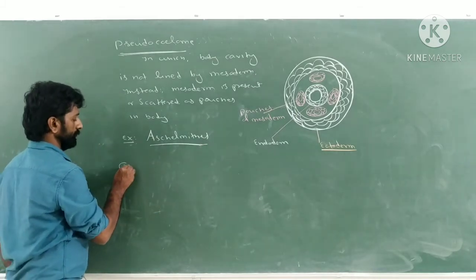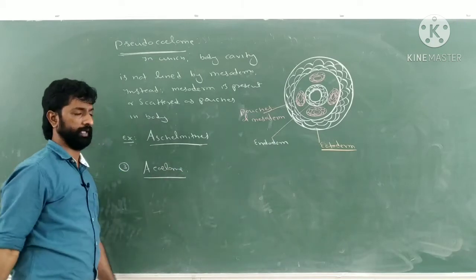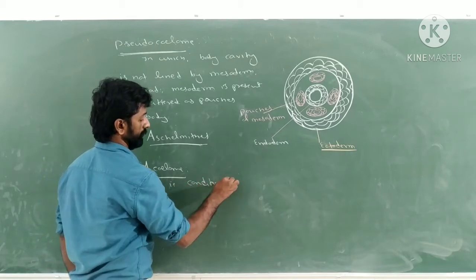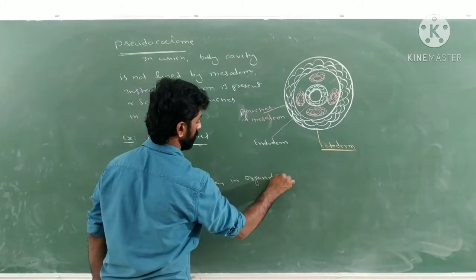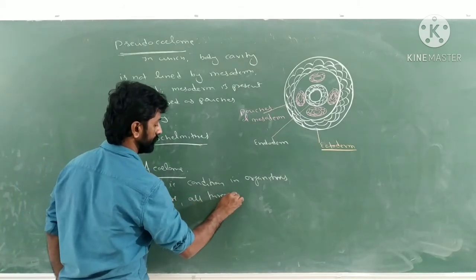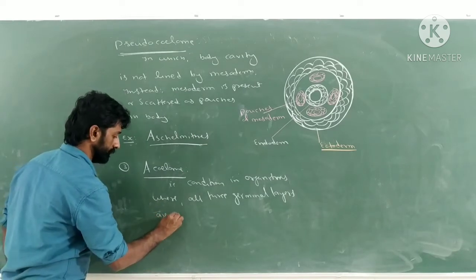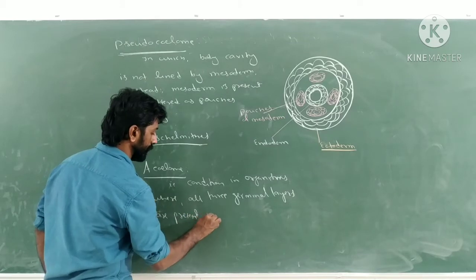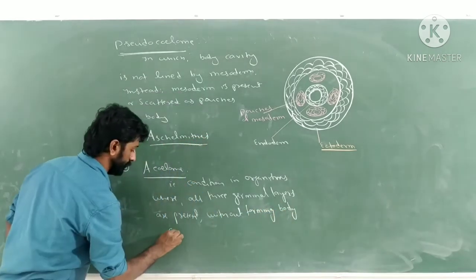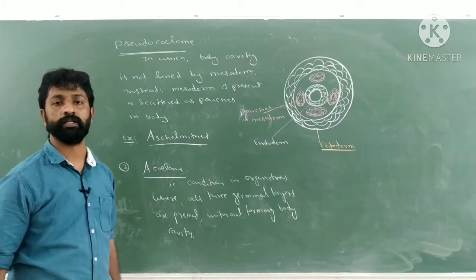The last type is acoelom. Acoelom is a condition in organisms where all three germinal layers — ectoderm, endoderm, and mesoderm — are present, but without forming any body cavity. When the body cavity is absent, such a condition is called acoelom, and such organisms are called acoelomates.